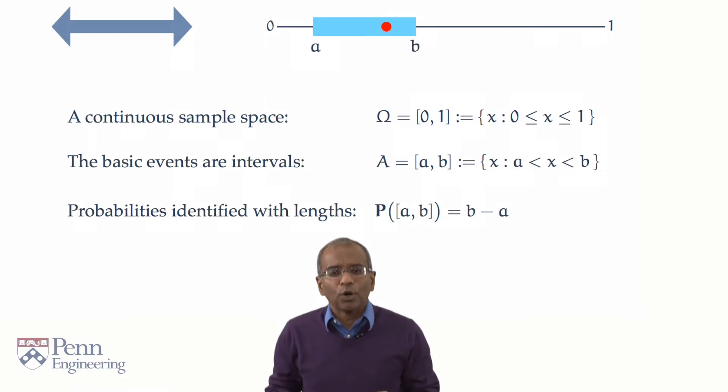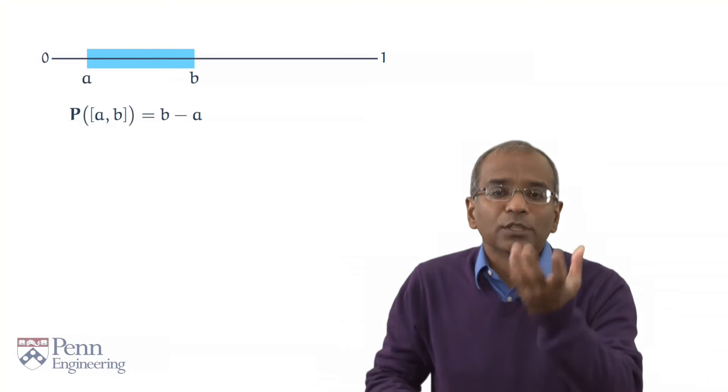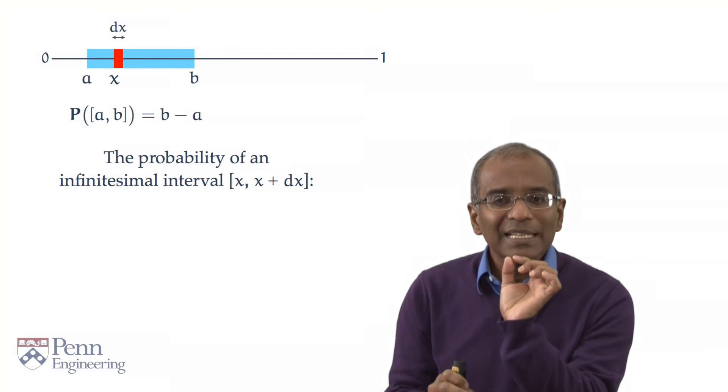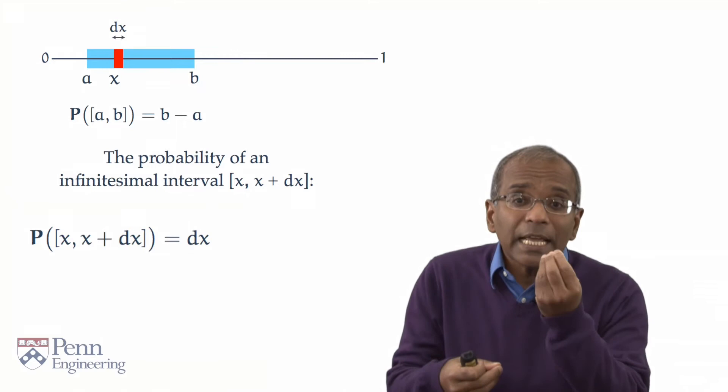So let's start again. Key here was this translation invariance. Probabilities do not depend upon the interval positioning, but only on the length of the interval. Suppose we consider an infinitesimal interval situated at x with an infinitesimal length dx, like indicated by the red bar in the figure. What probability should be assigned to this? Naturally, the length of the interval, in this case, that infinitesimal length dx.